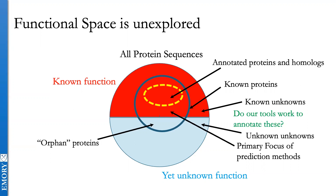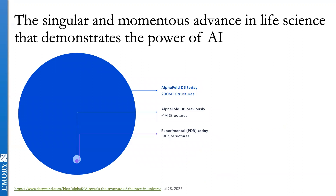Now I want to talk about deep learning in biology. Eric Topol, director of Scripps Research Translational Institute, said in 2022 that AlphaFold is the singular and momentous advance in life science that demonstrates the power of AI. The small dot in purple represents the roughly 190,000 experimentally determined PDB structures that existed in 2022, which took us 30 years to assemble. Then we got the release of the original AlphaFold database with 1 million structures — a five-fold increase.